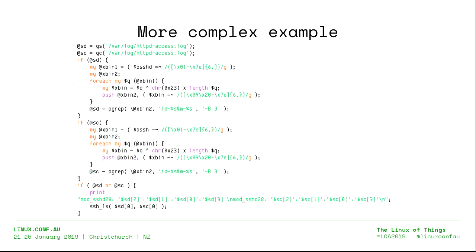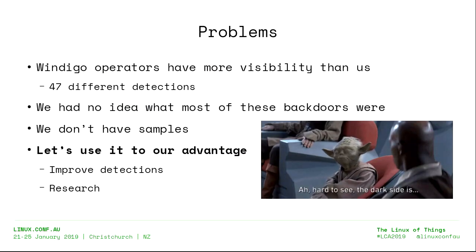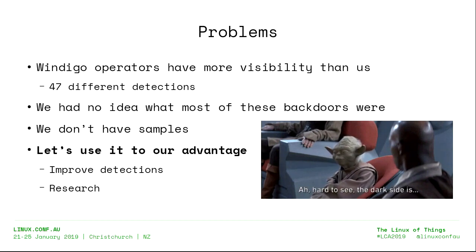A more complex example: it will XOR with a one-byte key — you can see 0x23 — XOR the SSH daemon or client, check if a pattern matches, and print SSH_d28 signature and read the already stolen credentials. So we saw they had 47 different detections, and we had no idea what most of these backdoors were and didn't have the samples. We decided to pivot on their knowledge and use it to our advantage to improve detections and for research purposes.